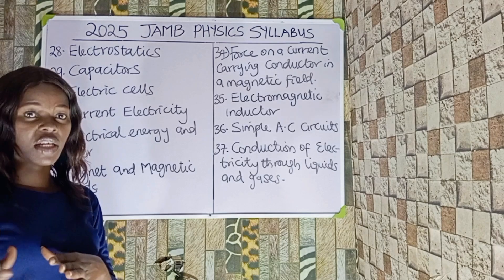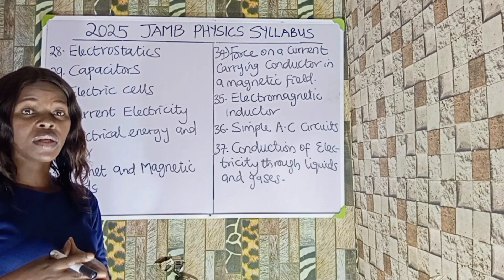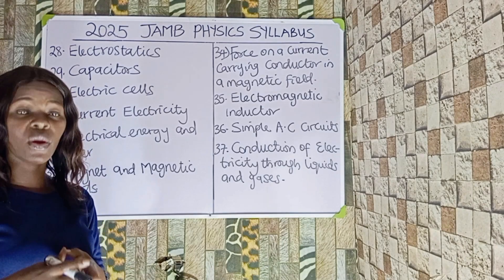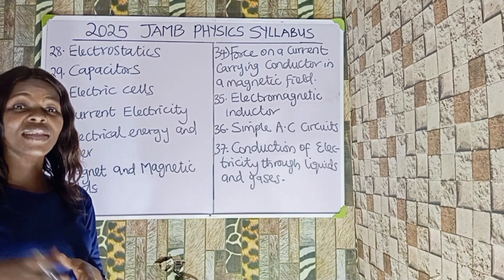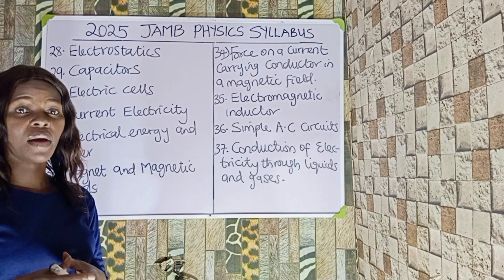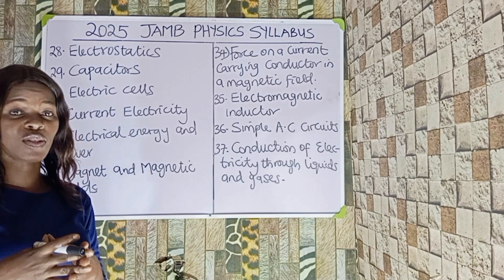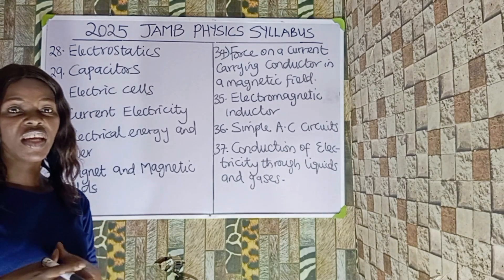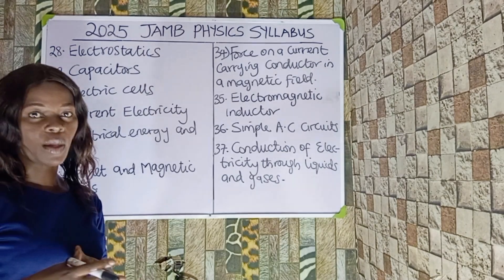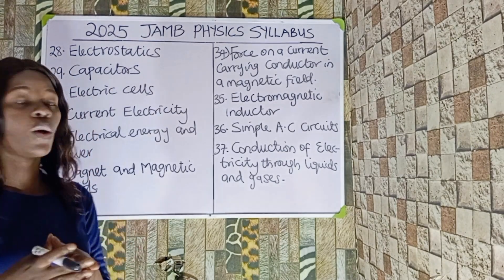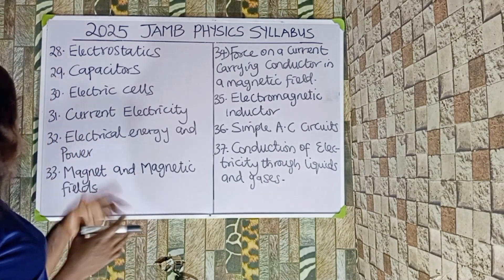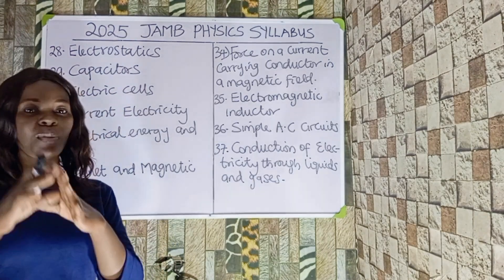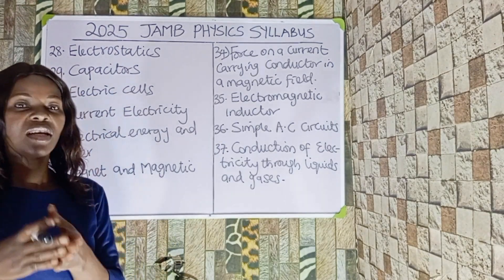Number twenty-eight is capacitors. We know that capacitors are for storing electric charges. Under capacitors we should look at the definition of capacitance, the arrangement of capacitors in series and in parallel, the combined resultant capacitance, and the energy stored in a capacitor.